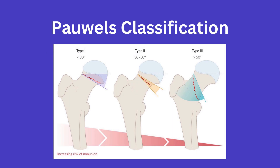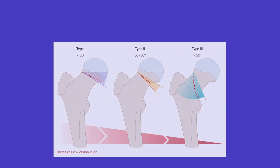The Powell classification is based on the inclination of the femoral neck fracture, looking at the angle between the fracture line of the distal fragment and the horizontal line, in order to determine shearing stress and compressive forces during injury.